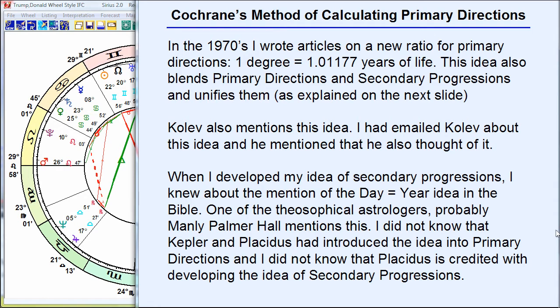I also have a method of calculating primary directions. I wrote about it in articles in the 1970s, and I came up with a ratio of one degree equals 1.01177 years of life. We've seen how Ptolemy has a degree equal to a year, and Nabod has a slightly different ratio. My ratio comes out to 1.01177.